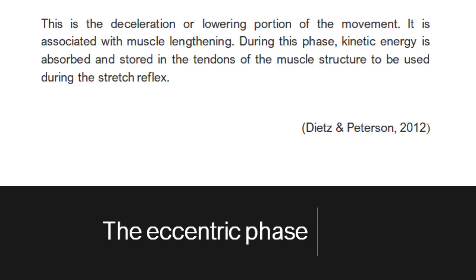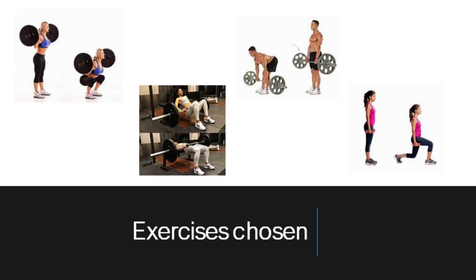The eccentric phase, as part of tri-phasic training, was the main objective of the session. As stated by Dietz and Peterson, the eccentric phase is the acceleration or lowering portion of the movement, associated with muscle lengthening. During this phase, kinetic energy is absorbed and stored in the tendons of the muscle structure to be used during the stretch reflex. For the most effective means of applying stress and improving eccentric qualities, I used large compound movements with an accentuated, slow eccentric phase. The time under tension allows both the muscle spindle and Golgi tendon organs to feel and adapt to higher levels of stress compared to normal dynamic lifting. This will potentiate the muscle spindle and inhibit the Golgi tendon organs, leading to an improved stretch shortening cycle and increased force production.